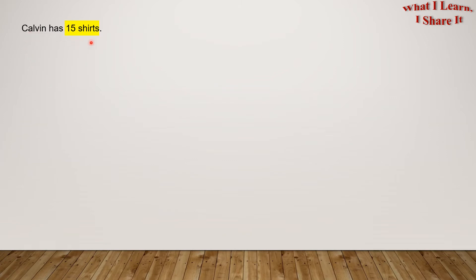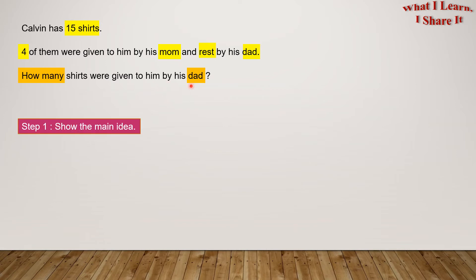Calvin has 15 shirts. Four of them were given to him by his mom and the rest by his dad. How many shirts were given to him by his dad? Step one: Show the main idea.